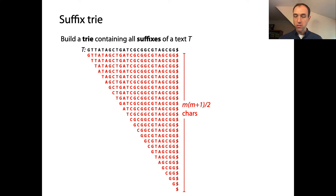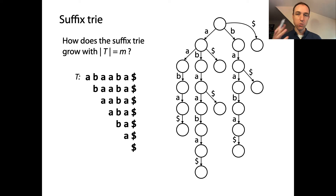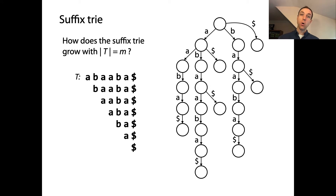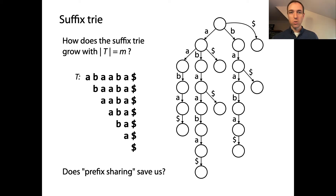We did learn something about suffix tries, or I should say about tries in general, which is that they have prefix sharing. So if two of the suffixes have a shared prefix — for example, this suffix starts with 'aba' and this suffix starts with 'aba' — there's only one path through the trie starting from the root that's labeled 'aba'. We don't have two separate paths, even though two separate suffixes start with that same string. So we might hope that this prefix sharing, this collapsing, is perhaps going to save us from quadratic growth in theory or in practice.